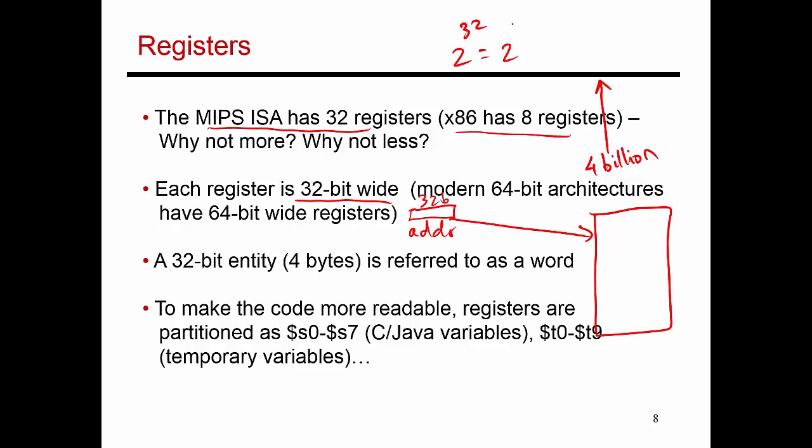2 to the 32 is nothing but 2 to the 10 times 2 to the 10 times 2 to the 10 times 2 squared. 2 to the 10 is 1024, which we refer to as 1k. So 1k times 1k times 1k gives you 1 gig, or close to a billion. Finally, I have 4 over here, so this gives me 4 gig values, roughly 4 billion values.